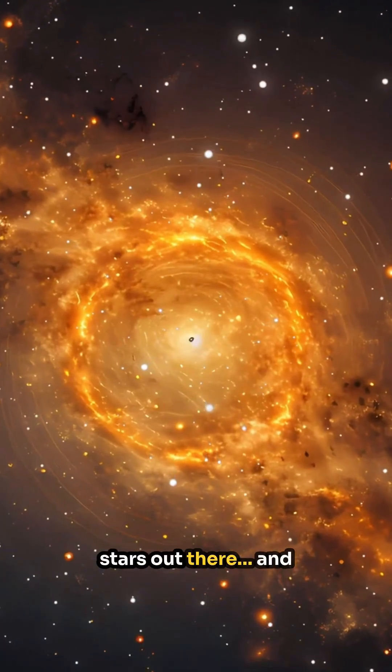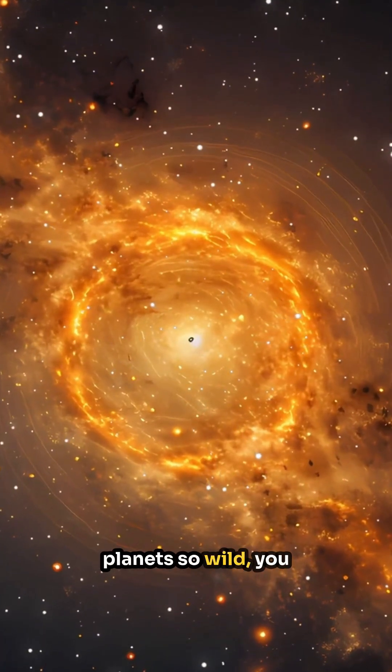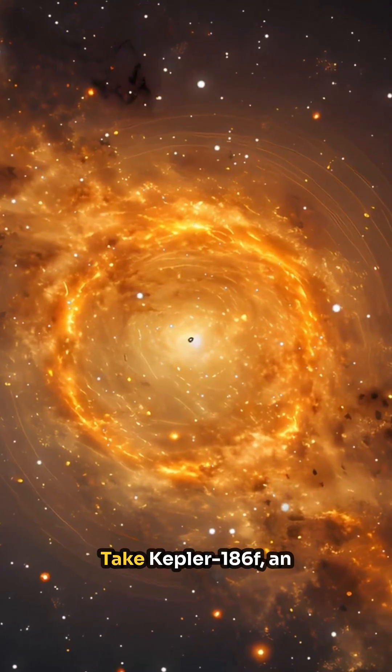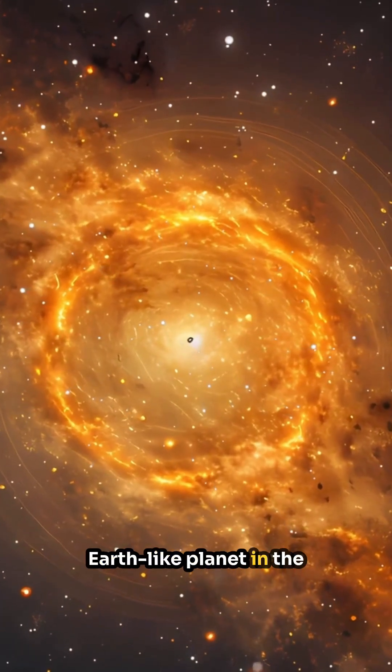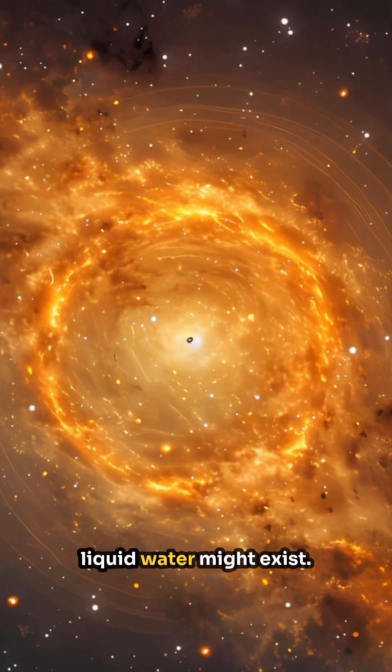Imagine billions of stars out there, and some of them have planets so wild you won't believe they exist. Take Kepler-186f, an Earth-like planet in the habitable zone where liquid water might exist.